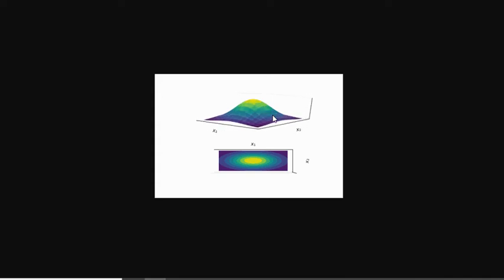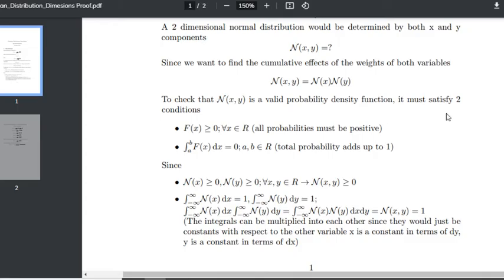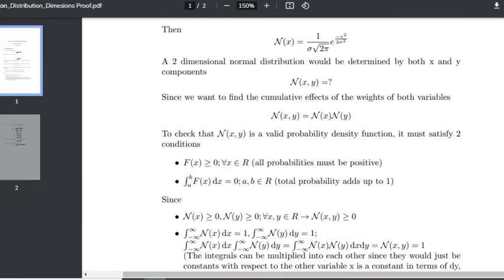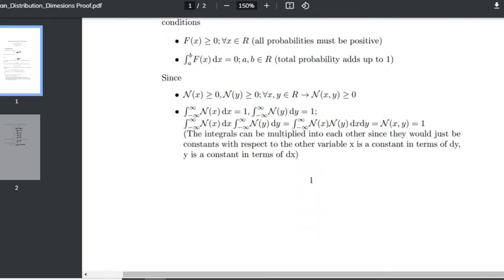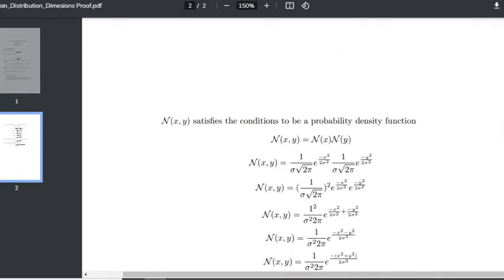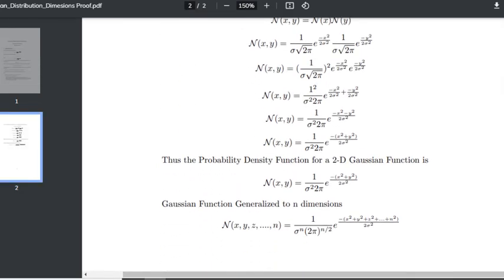And that way, at the end, if we go through a bit of the proof, a bit of the math, what you actually end up at the end is this function right here. This is the probability density function for a two-dimensional Gaussian function. That's for a regular Gaussian function. And if we generalize it to n dimensions, we'll actually end up with this equation at the bottom.